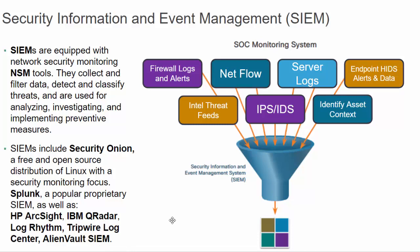The function of a SIEM is to serve as a point of aggregation where all threat intelligence, alerts, and logs get sent. It gives the analyst a single place to make sense of all the security-related data coming into the Security Operations Center — things like firewall logs and alerts, NetFlow information, server logs, endpoint host intrusion detection system alerts, global intel threat feeds, IPS or IDS alerts, Snort alerts, and context about various assets.